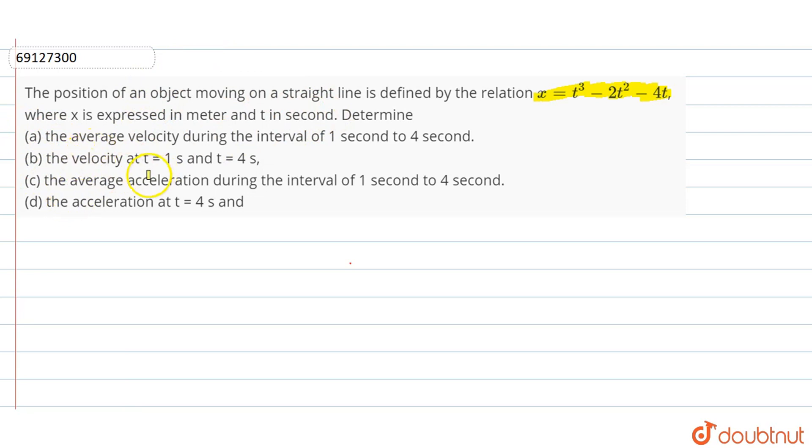The velocity at t equals 1 second and t equals 4 seconds. The average acceleration during the interval of 1 second to 4 seconds. The acceleration at t equals 4 seconds. Okay, let's start with the first part.